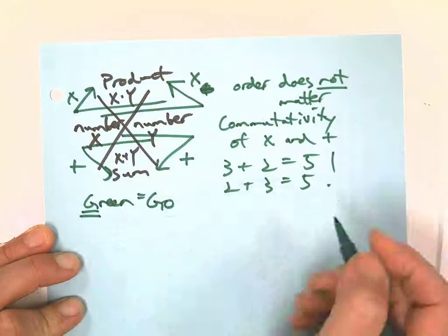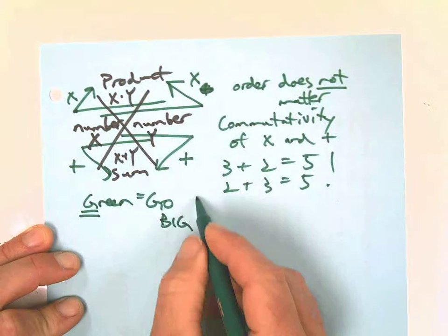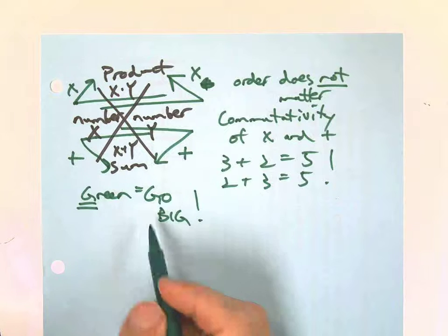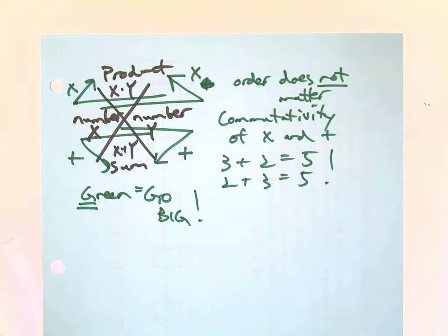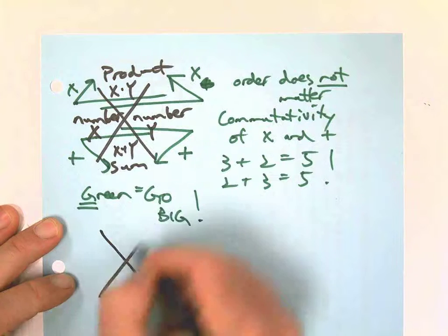I chose green because there's a G there. Green means go and go big. Okay, go big or go home. Most of the time, multiplying and adding things makes them bigger, so that's why I'm using green. Green is go, go big. Hope that works for you. You can use any color you want.